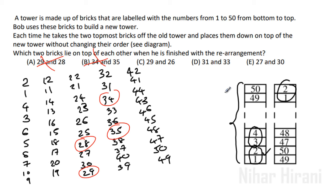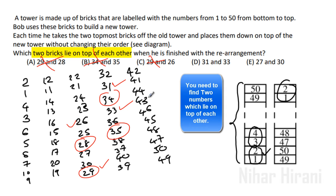29, 26. Let me check. 29 is this one and 26 is this one. No. 31, 33. So 31 is here and 33 is here. They are not above each other.